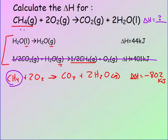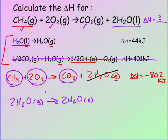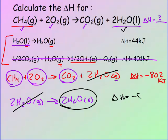CH4 is now in the right location and number, oxygen is correct, and CO2 is correct. But I need H2O liquid — I currently have H2O gas. H2O liquid is in the first reaction, but it's a reactant and I need it as a product, and I need two of them. So I flip that reaction and multiply by two as well. Now the H2O gas terms cancel out, leaving H2O liquid. The delta H for this adjusted reaction, flipped and multiplied by two, is negative 88 kilojoules.